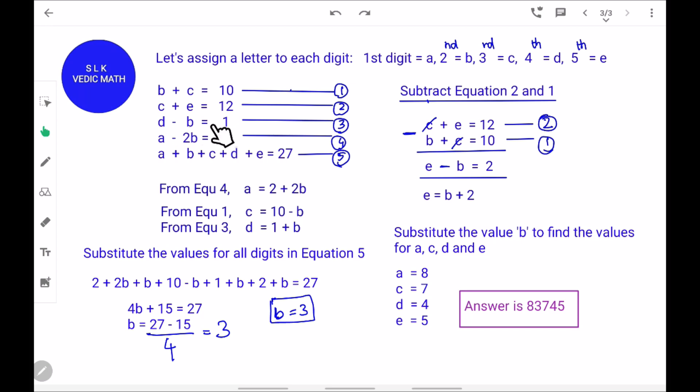Next, it says D minus B equal to 1. D is 4 and B is 3. 4 minus 3 is 1. Next, it says A minus 2B equal to 2. A is 8, and 8 minus 2B should equal 2. 2 times 3 is 6, and 8 minus 6 is 2.